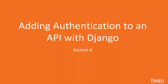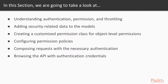Hi! Welcome to the new section: Adding Authentication to an API with Django. We will begin this section by understanding authentication, permissions, and throttling. Then we will be adding security data to the models and create permission classes. Moving ahead, we will configure these permission policies and then compose requests. Finally, we will be browsing the API with authentication details.